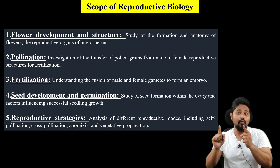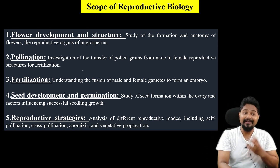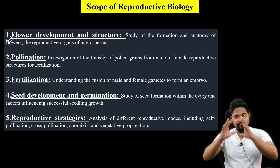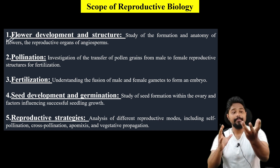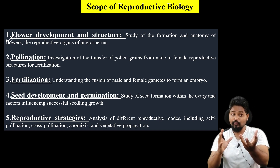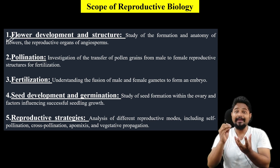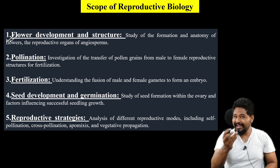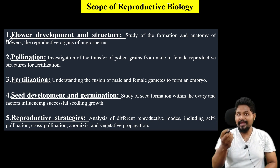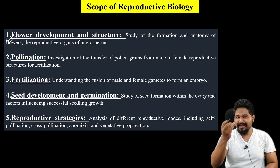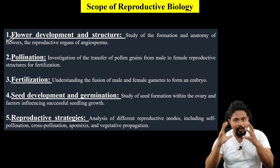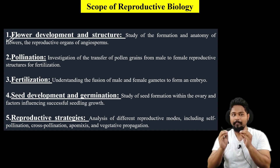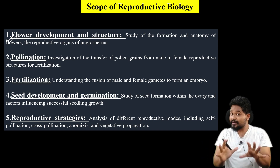This paper covers understanding flower development and structure. I will discuss flower development. The topics include flower structure, pollens, anthers, embryos, carpels, stigma, and style. I will discuss this detailed knowledge within reproductive biology.